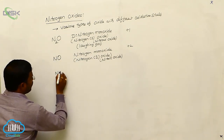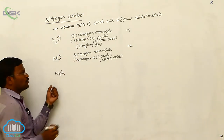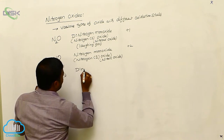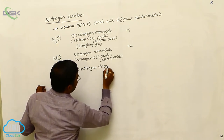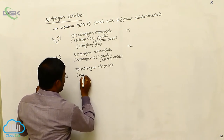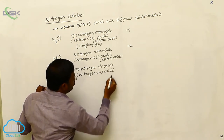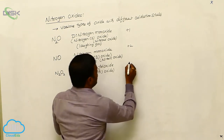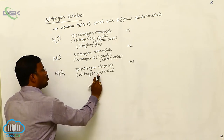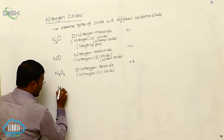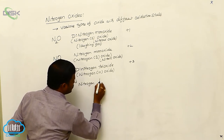One more example is N₂O₃. It is called dinitrogen trioxide, also known as nitrogen(III) oxide. The Roman numeral 3 indicates the oxidation state of nitrogen in dinitrogen trioxide is +3. One more example is NO₂, which is called nitrogen dioxide, also known as nitrogen(IV) oxide.